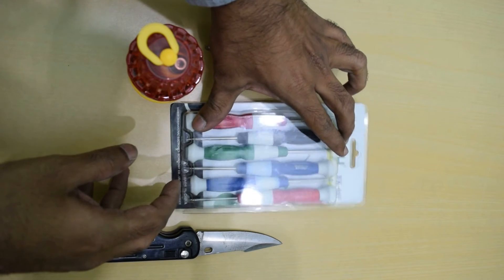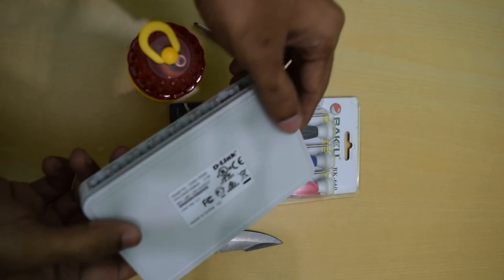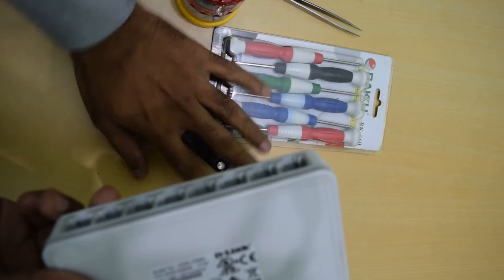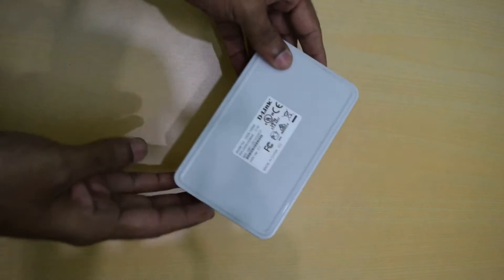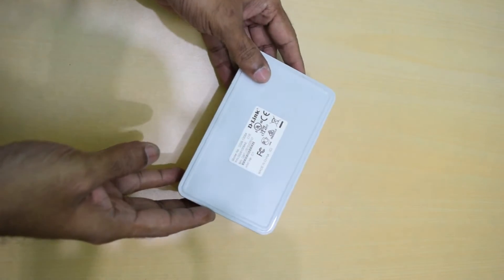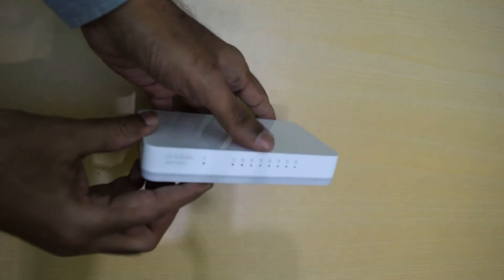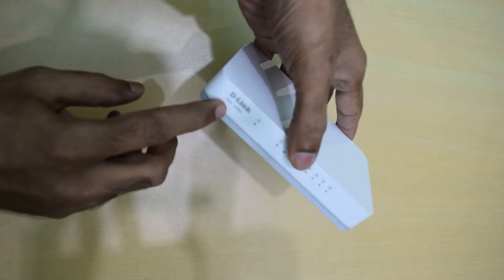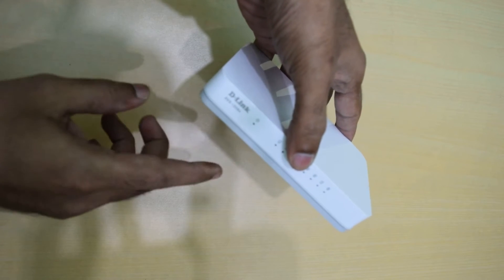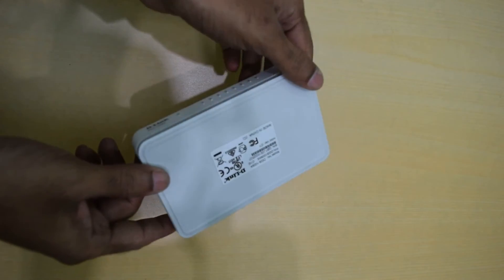Here is the D-Link switch. Let me push these tools aside. You can see it much closer here, hopefully the camera is focusing. Its model is printed over here, which is DGS-1008A.